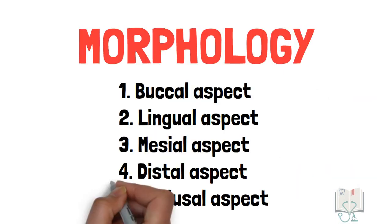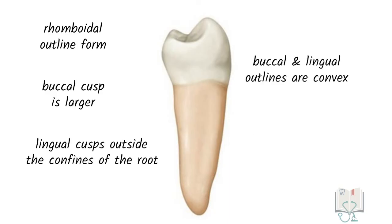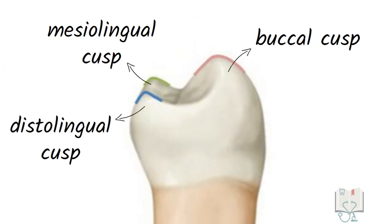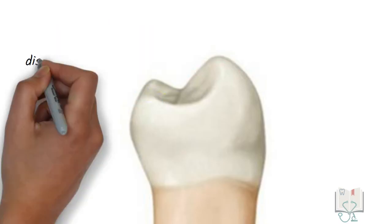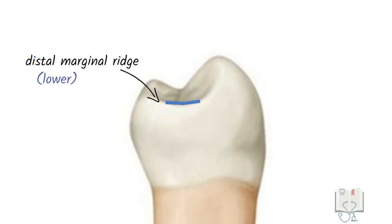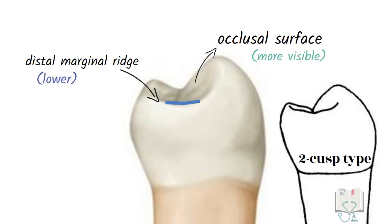Next, the distal aspect. All the features of the outline form from the mesial aspect are the same in the distal aspect as well, except that from this aspect all three cusps are seen. As the distal marginal ridge is lower than the mesial marginal ridge, more of the occlusal surface is visible. In the two-cusp type, both cusps are seen.